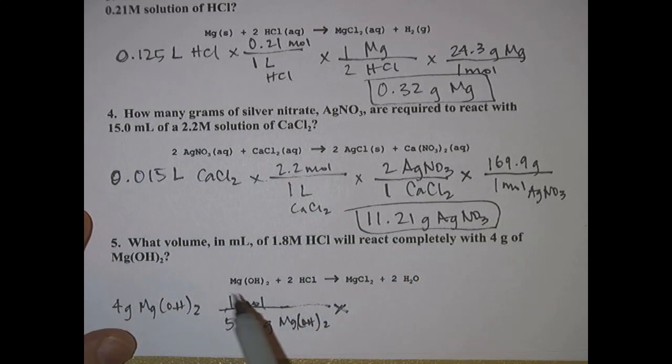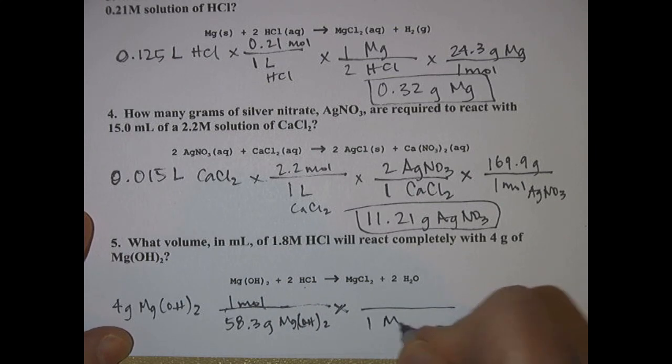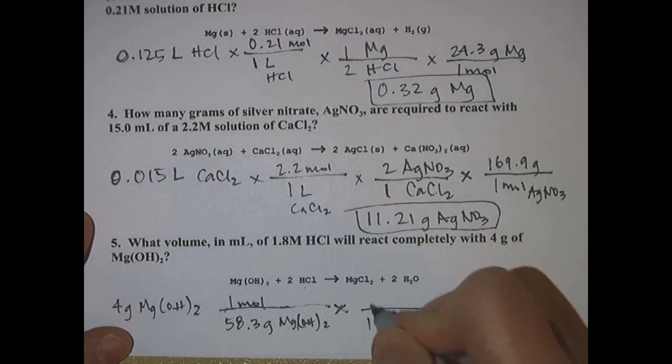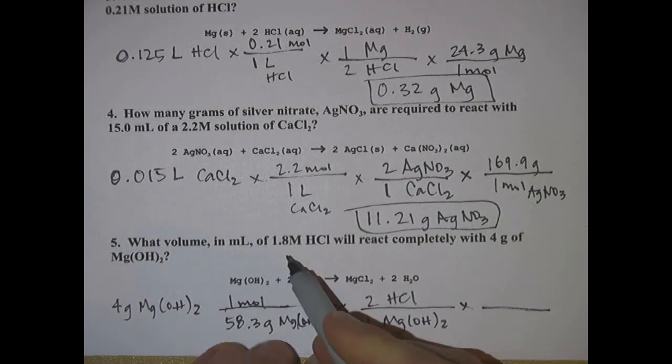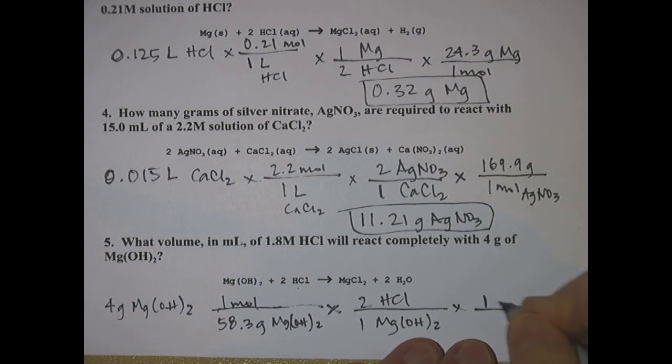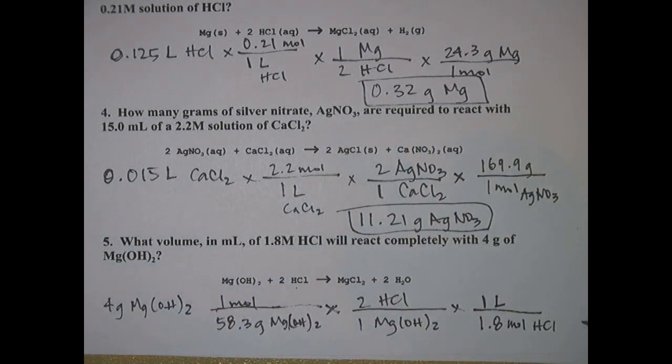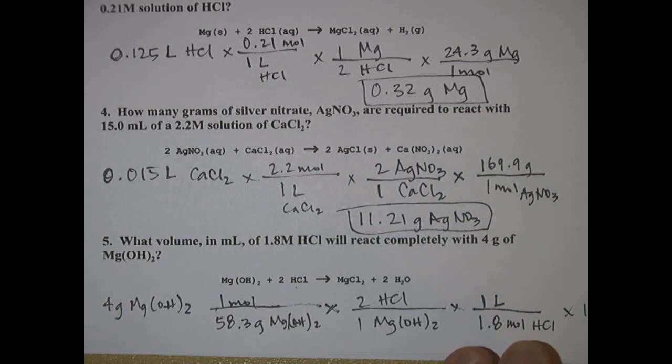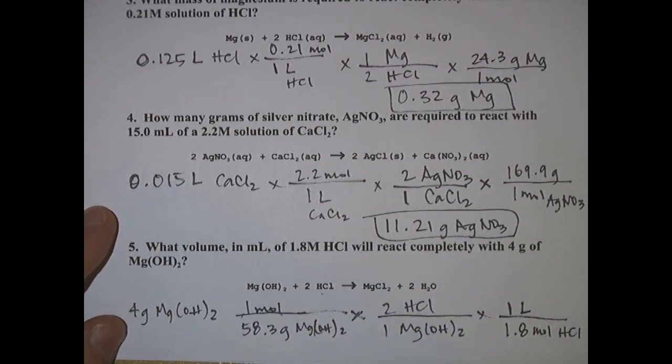We want to get from magnesium hydroxide to hydrochloric acid, so it's a one to two ratio. One magnesium hydroxide, one mole of it, will react with two moles of HCl. HCl in this case is a solution, its molarity is 1.8 moles per liter, so we would have one liter on top and 1.8 moles on bottom. We want our answer in milliliters, I ran out of space here, but we're going to take whatever we get here and multiply it by a thousand to get our answer in milliliters.